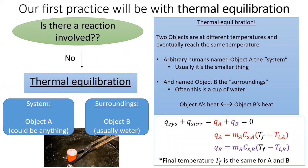In this case, the system will be object A, our hot piece of metal and the surroundings will be object B, the cold water. We can write a q equals MCAT expression for both A and B. Each object will have its own mass, its own heat capacity, and its own initial temperature. Note that the final temperature will be the same since this is a thermal equilibration problem where the hot thing and the cold thing exchange heat until they reach the same final temperature.